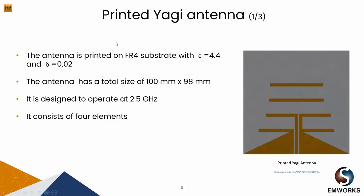This is the printed Yagi antenna that we are going to study today. The antenna is printed on an FR4 substrate which has a dielectric constant of 4.4 and loss tangent of 0.02. The antenna has a total size of 10 cm by 9.8 cm and this is smaller than the CubeSat surface. The antenna is designed to operate at 2.5 GHz. Like any other Yagi antennas, the printed Yagi has a reflector, driven element and two directors. For 50 ohm impedance matching, a tapered balun is being used.